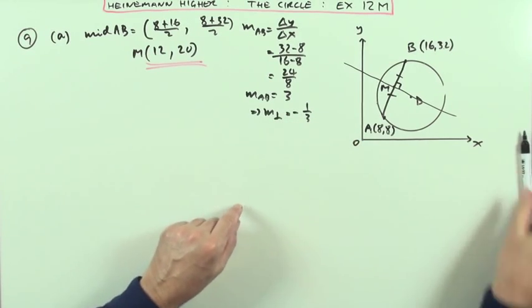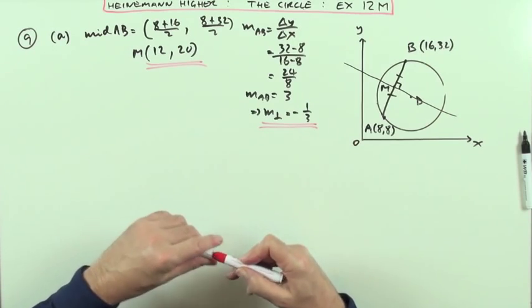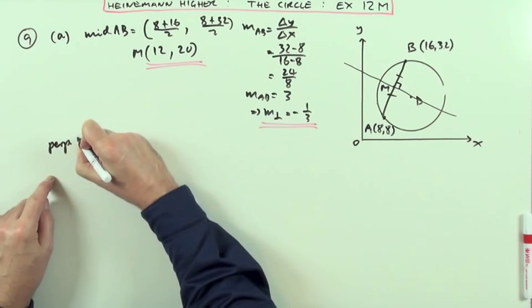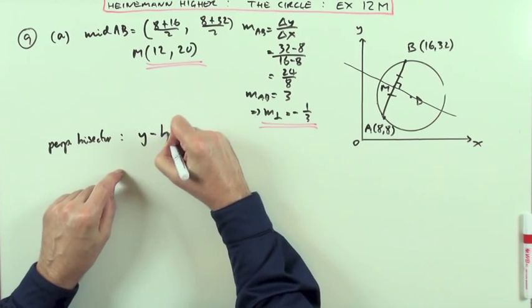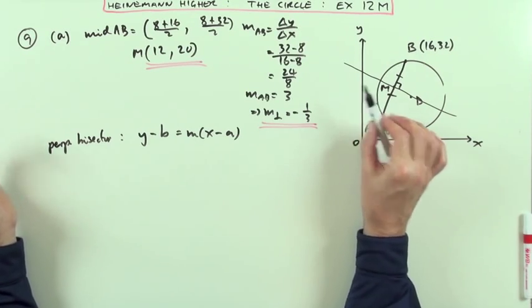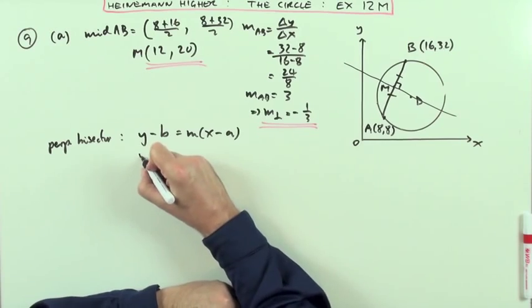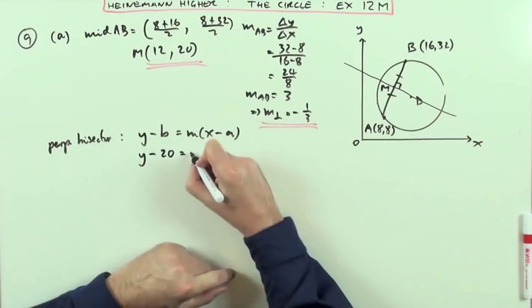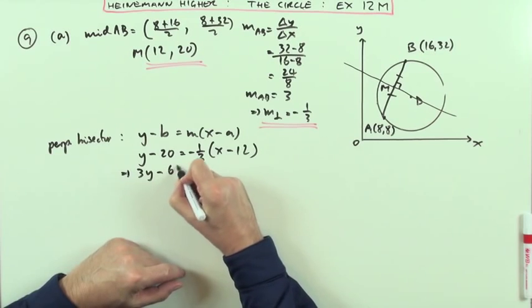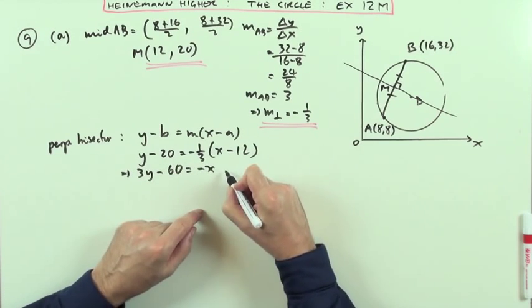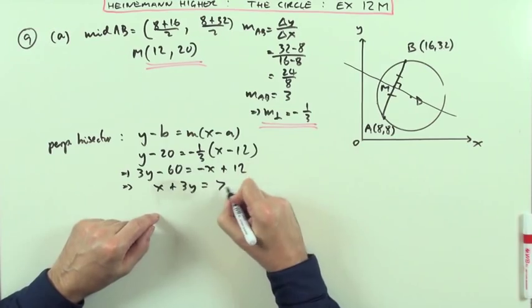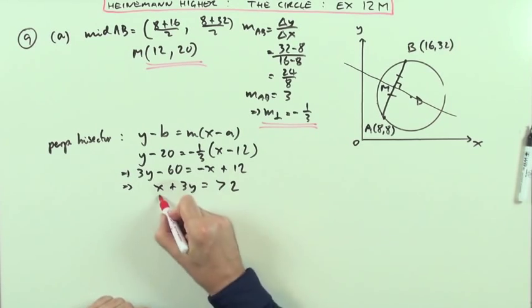So for part A, what's the equation of the perpendicular bisector? It's going to be y - b = m(x - a). So y minus the y coordinate 20 equals the gradient -1/3 times x minus the x coordinate 12. Multiply everything by 3: 3y - 60 = -x + 12. In any form you like: x + 3y = 72.